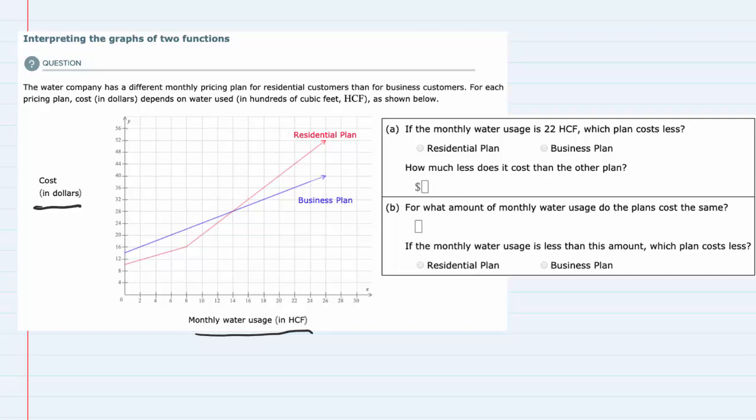Our first question is A: if the monthly water usage is 22 hundreds of cubic feet, which plan costs less? If we read along the bottom and go out to 22 hundreds of cubic feet, and read up from that value, we can see the two different costs.